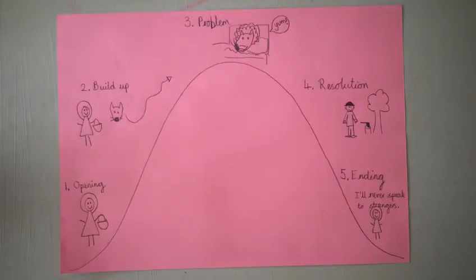So here is my finished story mountain. I've got the opening, which has Little Red Riding Hood with her basket going into the woods. The number two is the build-up. That is where I have said Little Red Riding Hood meets the wolf in the woods, and then the arrow shows that the wolf goes off towards grandma's house.